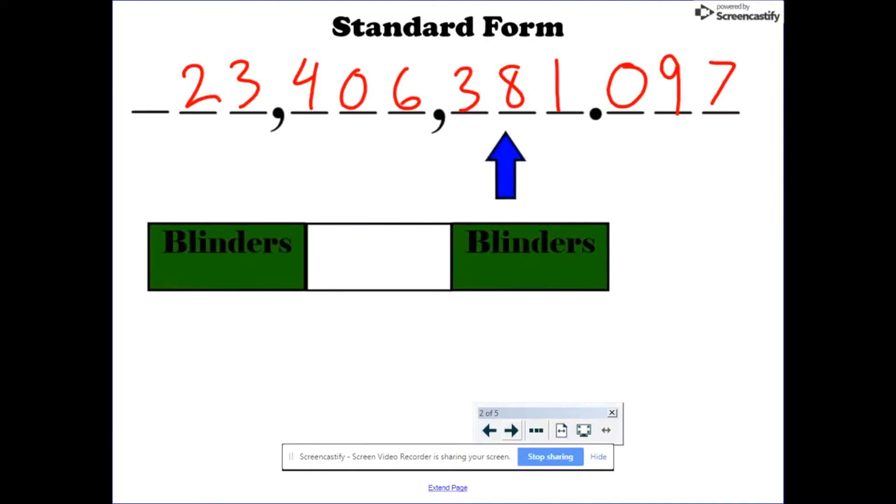The other area students sometimes struggle with are decimals. How do you read this? I mean, it's 97, but it certainly isn't 97 million or 97 ones. It's 97 something. And because it's a decimal, we know that's less than one. It's part of a whole number. So 23 million, 406,381 and 97 something.